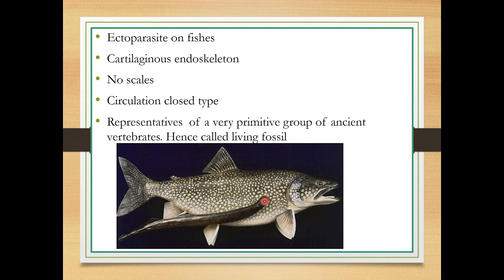With the help of their round mouth, they attach to the surface of larger fishes. They have a cartilaginous endoskeleton and no scales are present. Circulation is of the closed type. They represent a very primitive group of ancient vertebrates and are called living fossils — Cyclostomata is also known as living fossils.